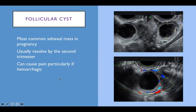Follicular cysts are the most common adnexal masses in pregnancy and usually resolve by the second trimester. They can be quite large — over 10 centimetres — though this one measures less than 5 cm. They can cause pain, particularly if there are small amounts of haemorrhage within them.